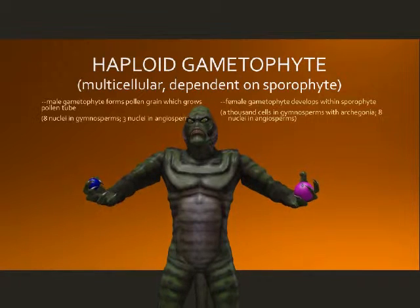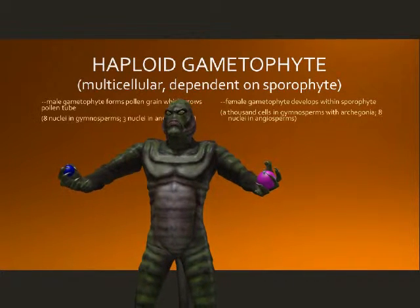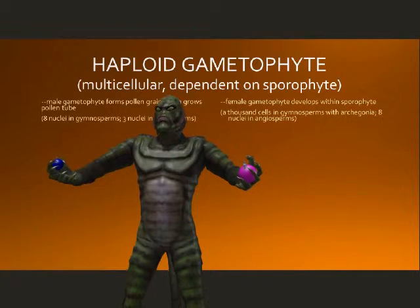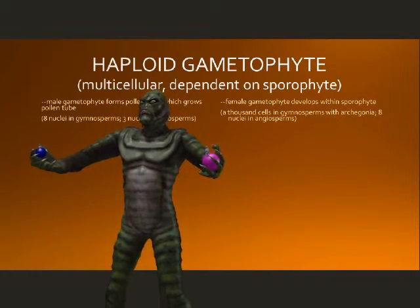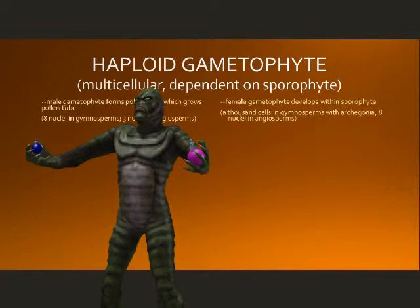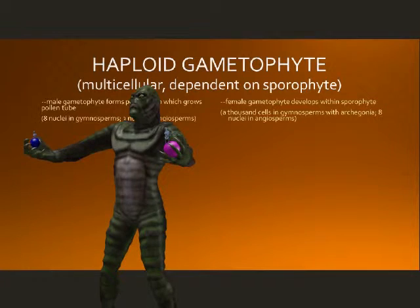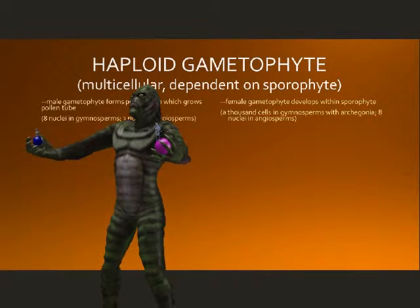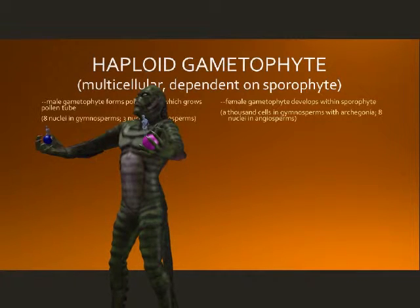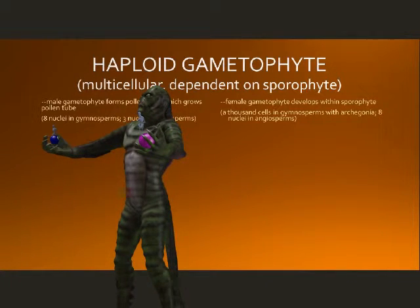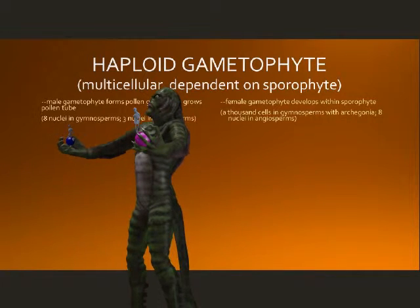The female gametophyte develops in and is surrounded by sporophyte tissue, in contrast to the pollen grain, which has a brief period where it's transported by either wind or a pollinator. The female gametophyte consists of about a thousand cells in gymnosperms and is complete with archegonia, where the eggs are produced. In contrast, the female gametophyte in angiosperms possesses only about eight nuclei.